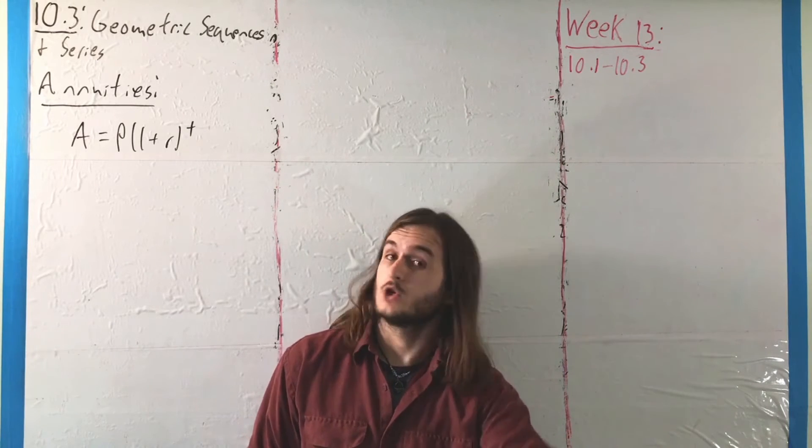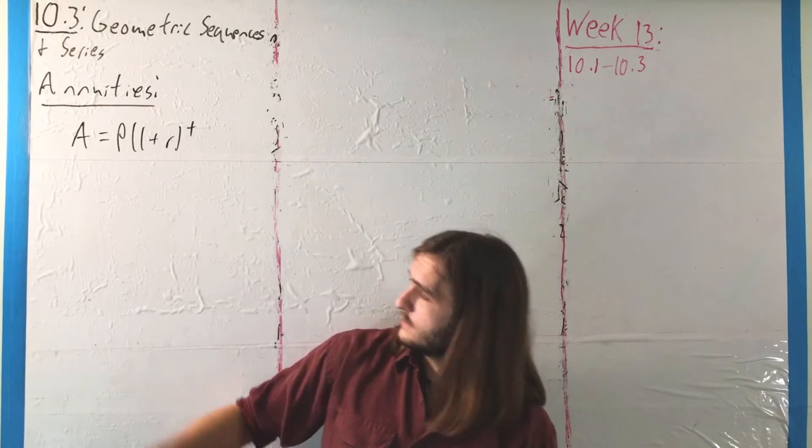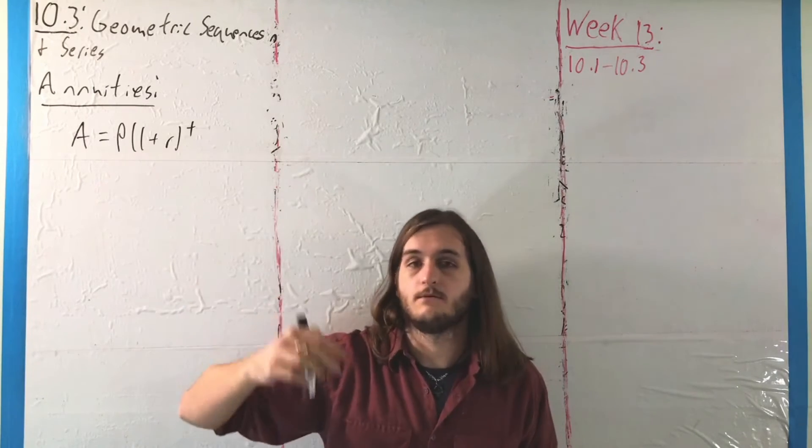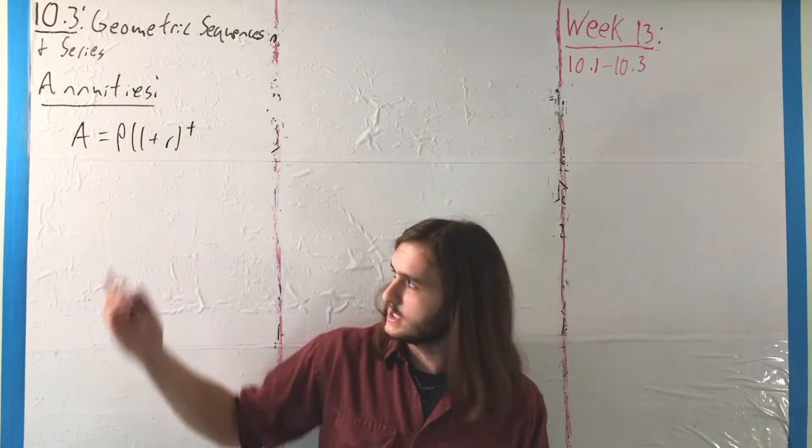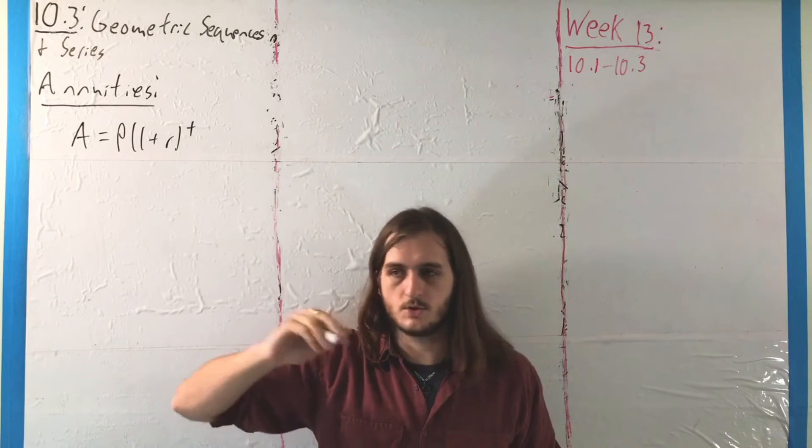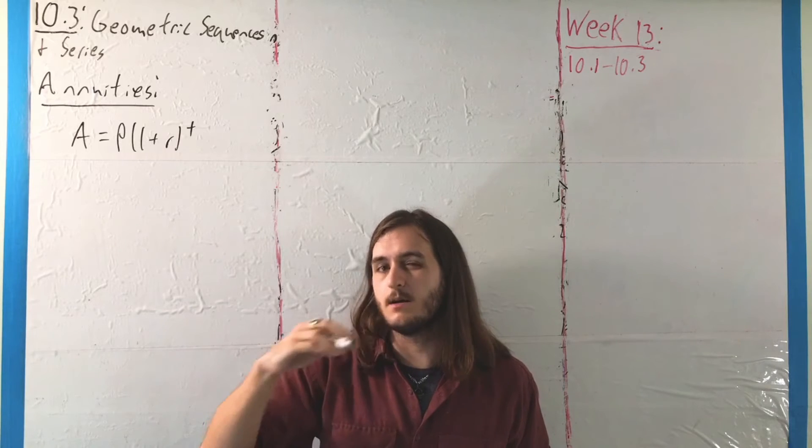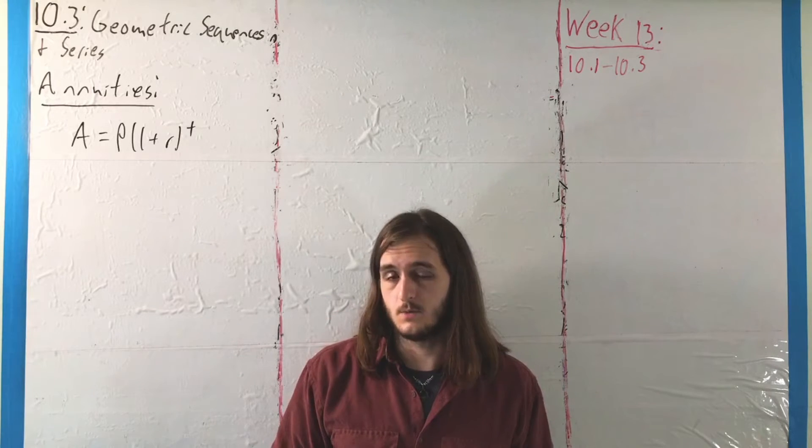But if we're going to look at this in terms of an annuity instead, we're going to be investing that value P every single year. So if you want to talk about the value of our investment, instead of just saying this year we've got our geometric sequence of values, you want to talk about a sum of geometric sequence values.